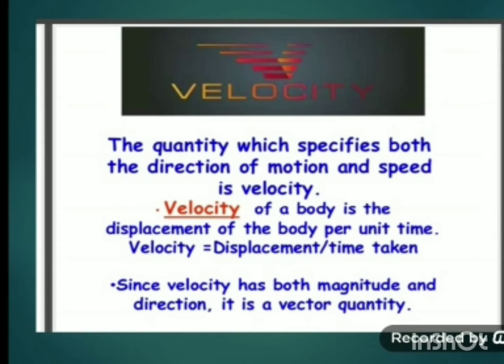Velocity is equal to displacement divided by time taken — that is, displacement per unit time. You can say that velocity is the speed of an object moving in a definite direction, or the distance traveled by the object in unit time in a definite direction.